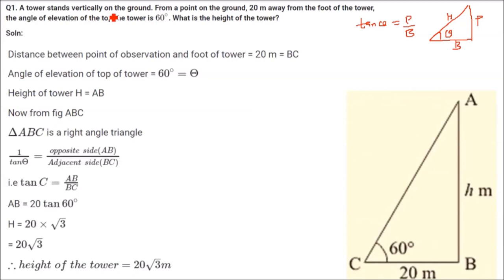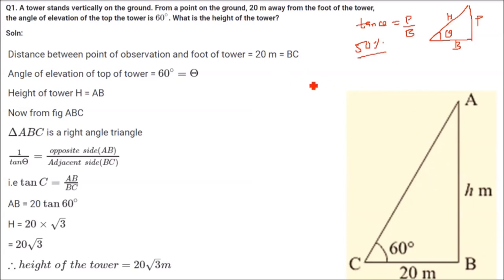So a tower stands vertically on the ground. What we have to do first is make a figure. 50% of the solution is making the figure. If you are able to make the figure correctly, then the problem will not be that difficult. So you have to make a figure first. If this is the ground, this is a tower.